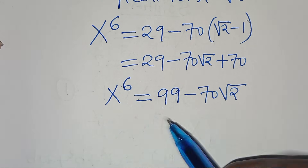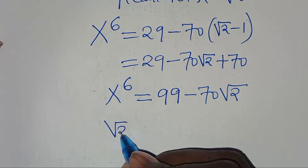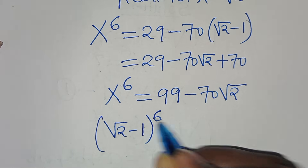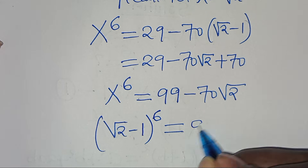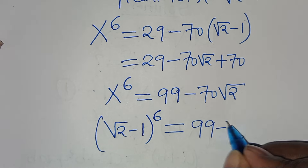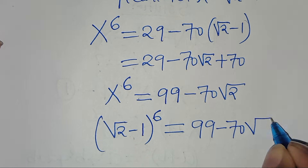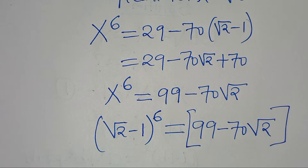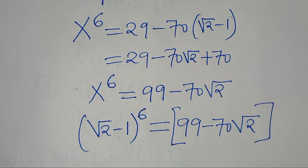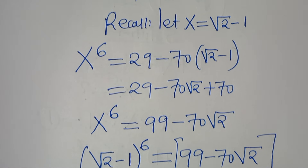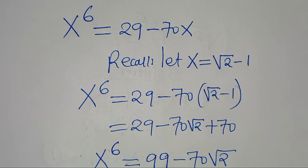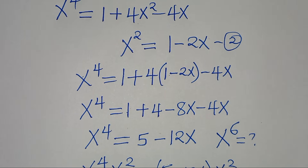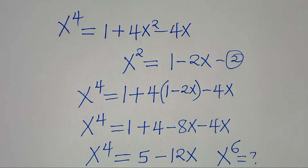Substituting back, we have square root of 2 minus 1 to the power of 6 equals 99 minus 70 root 2. And this is the solution to this math problem. Kindly follow the steps, like this video, and kindly subscribe. See you in the next video. Bye-bye for now.